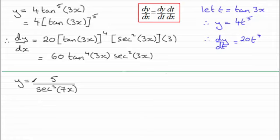Now for this next one, y equals 5 all over sec cubed 7x. What I'd want to do is think of this then as 5 all divided by,